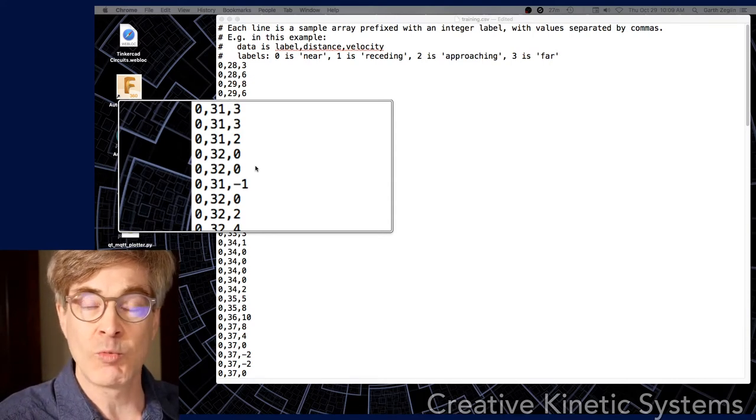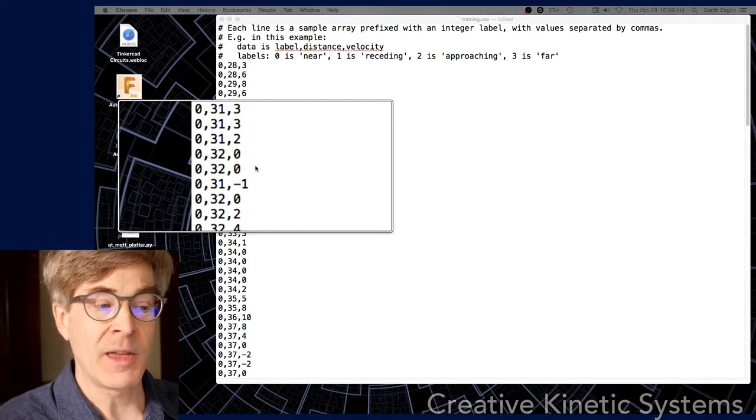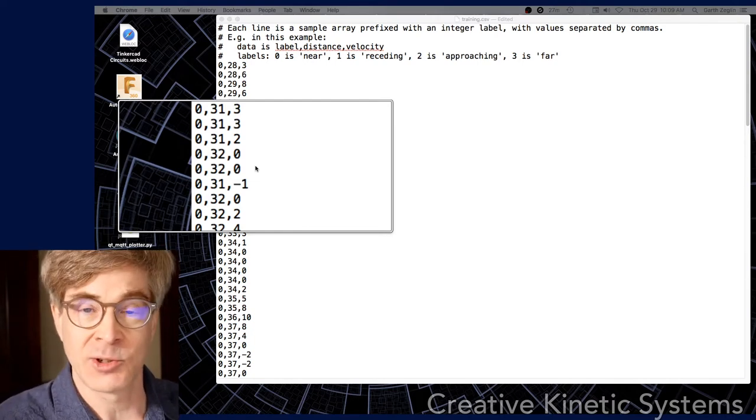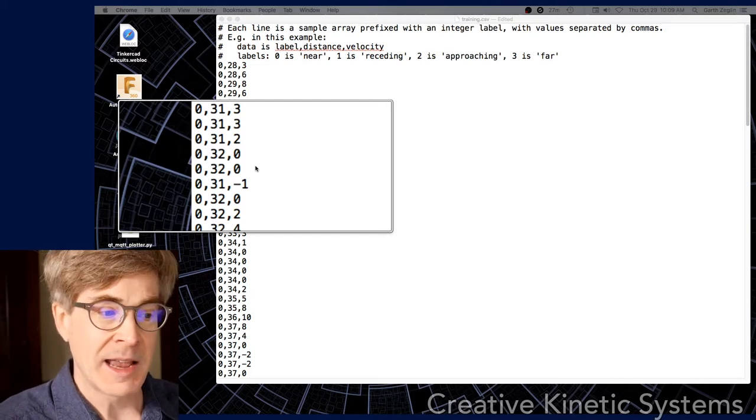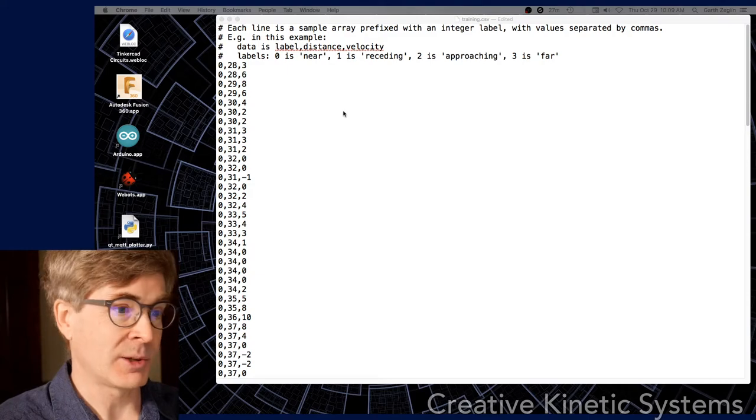This is basically the sonar, the processed range and range velocity of the sonar sensor that are then used and processed as integers because we're running on the Arduino here. That'll be used to build some code. So let's bring that code back and take a look at it.